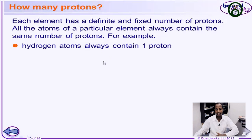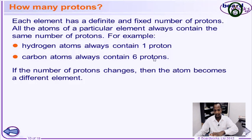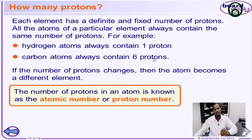If that is understood, hydrogen atoms always contain 1 proton, so the atomic number of hydrogen will be 1. Carbon atoms always contain 6 protons, meaning the atomic number of carbon will be 6. The number of protons changes based on the atom as it increases in the periodic table, which we will talk about in a subsequent video. The number of protons in an atom is known as the atomic number or the proton number.